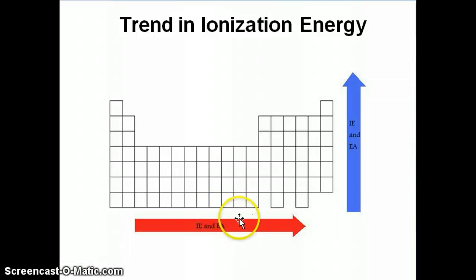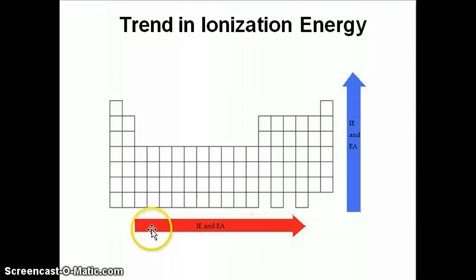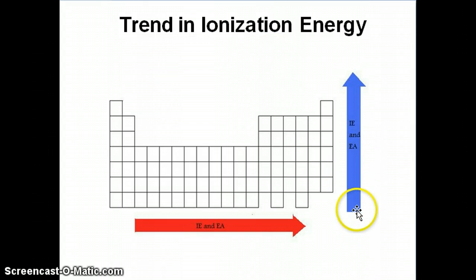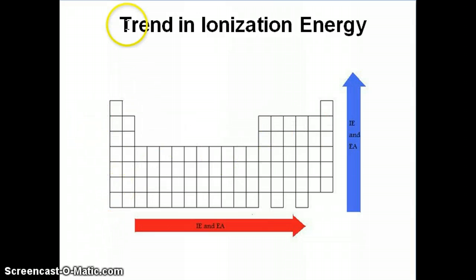In general, you can make this statement about the trend in ionization energy using the periodic table: when you go from left to right, you see an increase in ionization energy, and when you go from bottom to top in a group, you also see an increase. So overall, ionization energy increases going left to right across a period and increases going bottom to top in a group. The question we have to explain is why we see this particular pattern.